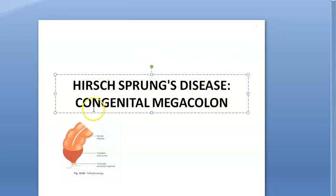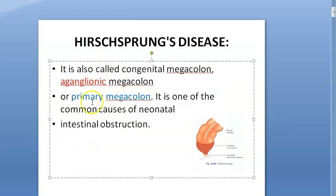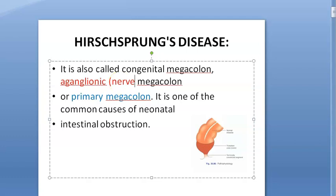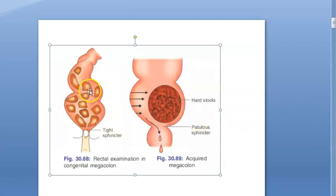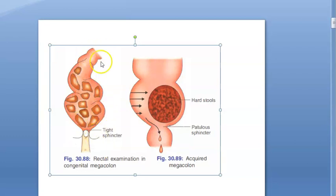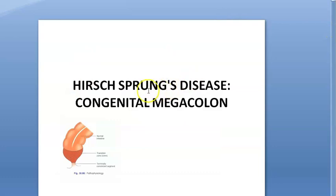Hirschsprung's disease is also called congenital megacolon, congenital aganglionic megacolon, or primary megacolon. Aganglionic means the nerves are absent in a portion of the colon. Because nerves are absent, the colon is unable to push fecal matter out, causing the colon to become enlarged — hence the term megacolon.